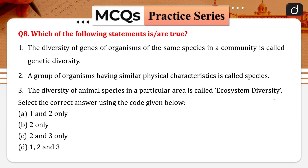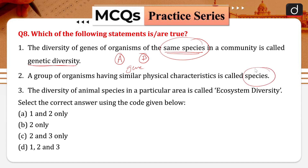Question number eight: which statements are true? The diversity of genes among organisms of the same species is called genetic diversity — for example, differences in genes between two humans is genetic diversity. A group of organisms having similar physical characteristics is called a species — all humans share two hands, two legs, two eyes, one nose, etc. That is correct. The diversity of animal species in a particular area is called ecosystem diversity.